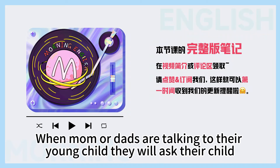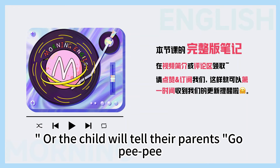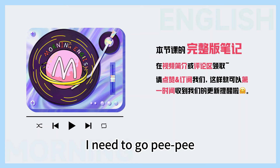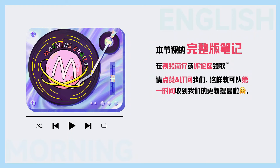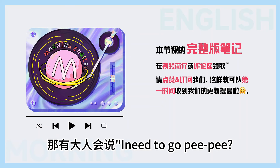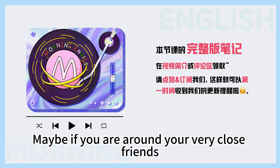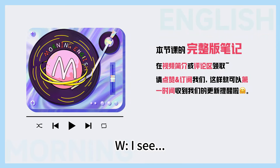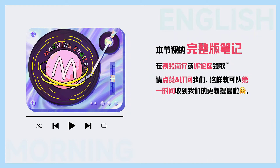OK, 那我们今天呢就是要跟着Tim一起来学习一下怎么样地道的、花式的在不同场合来表达我要去厕所. I think it depends on the situation that you're in or who you're around. When moms or dads are talking to their young child, they will ask, do you need to go pee pee? Or the child will tell their parents, go pee pee, which means I need to pee. It's so cute! 太可爱了. So the first way to say go to the bathroom is go pee pee.